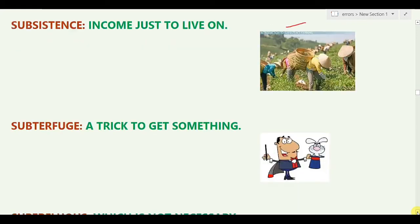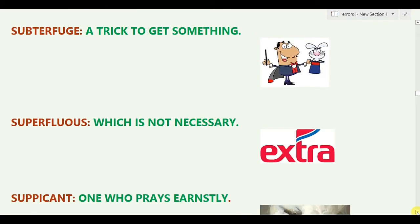The next word is 'Subterfuge,' which means a trick to get something — a trick to obtain something. You can see tricks coming up everywhere, and the main motive is to earn money. So he is using subterfuge.